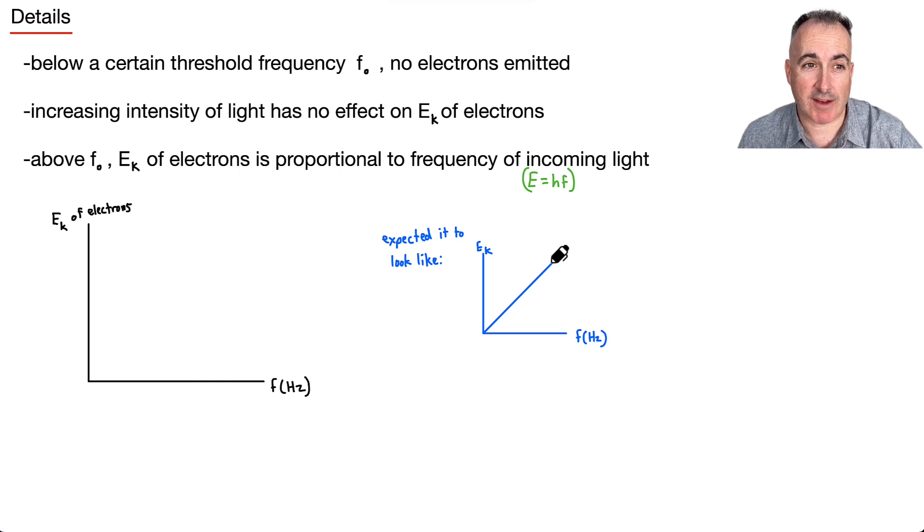What ends up happening instead is we have a certain threshold frequency. So we have this thing that we call f0. This is a threshold frequency below which no electrons are emitted. So in other words, this one here, we put a little f0 like this. Anything below this, nothing happens. There's nothing.